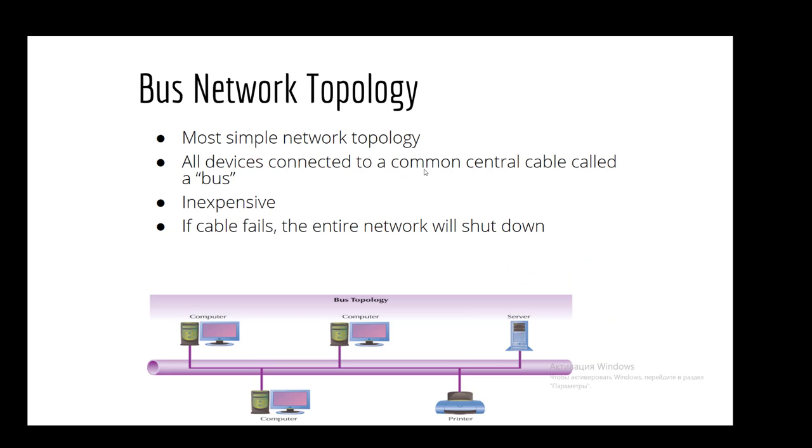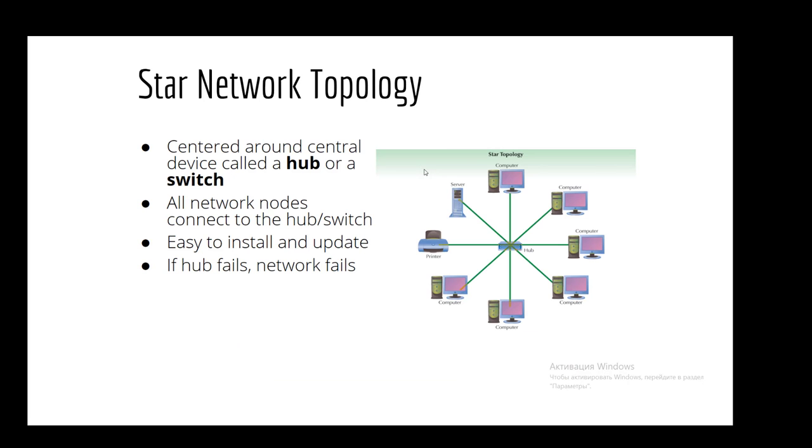So now let me define them separately. First, bus network topology. It has two main functions. First, it's the most simple network topology. Second, all devices connected to a common central cable called a bus. It's inexpensive and if cable fails, the entire network will shut down. Next, it's star network topology. It's centered around a central device called a hub or a switch. All network nodes connect to the hub or switch. Easy to install and update, and finally, if hub fails, network also fails.